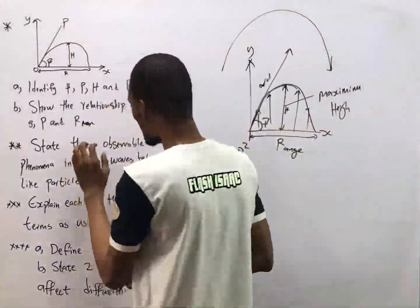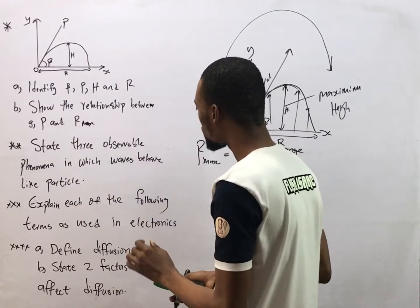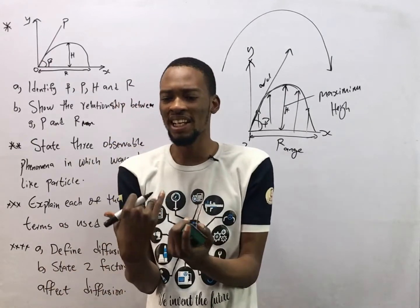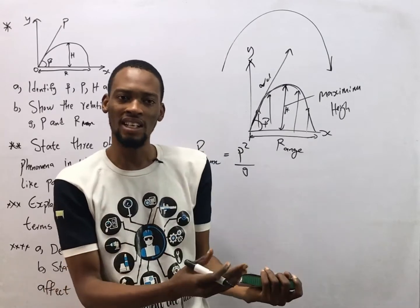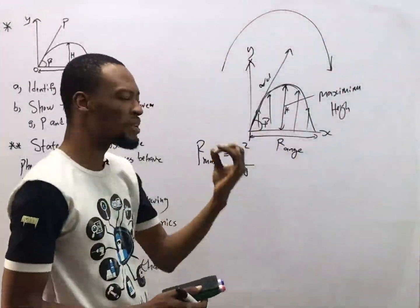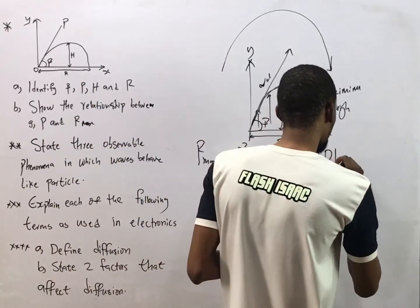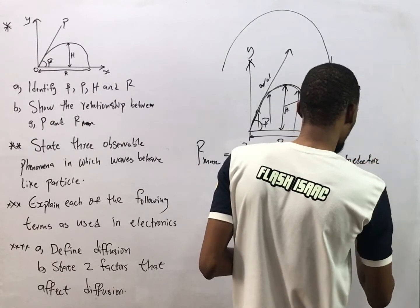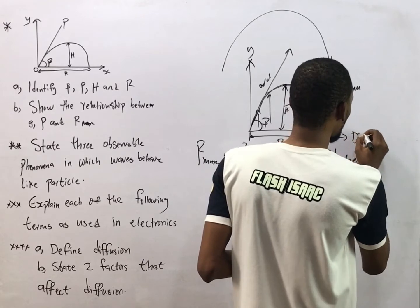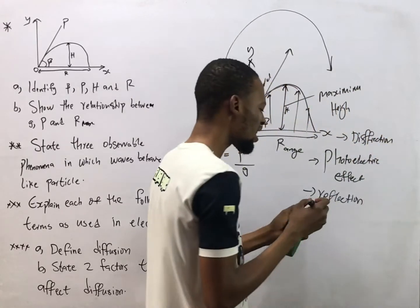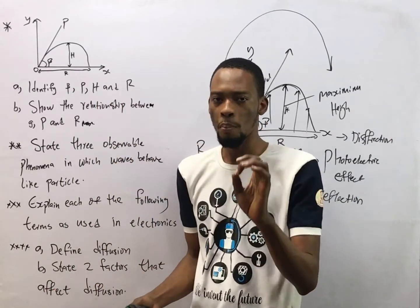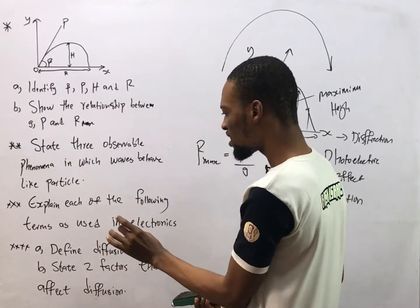The next question says: state three observable phenomena in which waves behave like particles. This question is under wave-particle duality, in which waves can exhibit some particle nature. The phenomena that show waves behave as particles are: photoelectric effect, reflection, and diffraction.